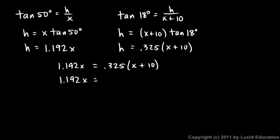1.192x equals 0.325x plus 3.25. Then we'll subtract 0.325x from each side. 1.192 minus 0.325 is 0.867, so on the left I have 0.867x and on the right I have 3.25. Then I just divide both sides by 0.867, and I'm left with x is equal to 3.25 over 0.867, that's 3.749.